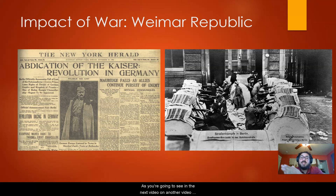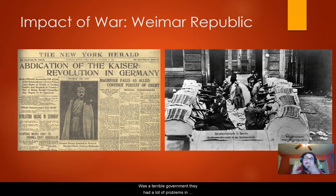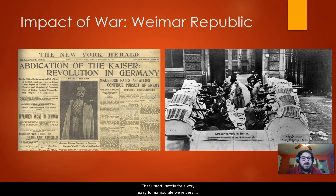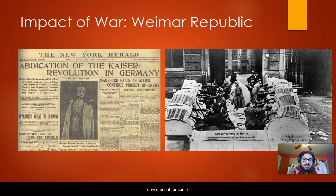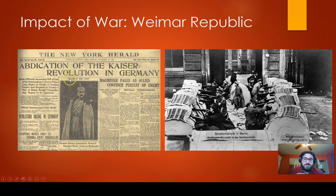As you'll see in the next video on the weakness of political systems, the Weimar Republic was a troubled government with many issues that were very easy to manipulate, control, and break. World War I led to humiliation, then economic crisis, then social division, then a brand new government dealing with multiple uprisings — thus creating a perfect environment for someone, anyone, to take over. And in our case, that was the Nazi party.